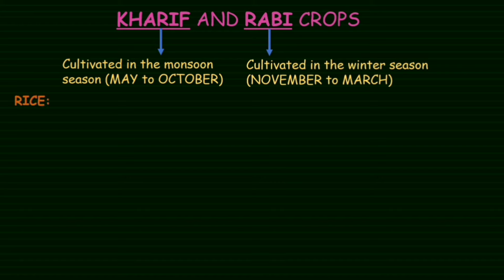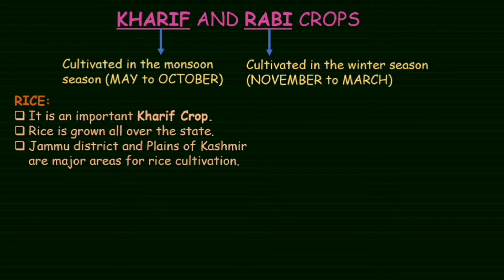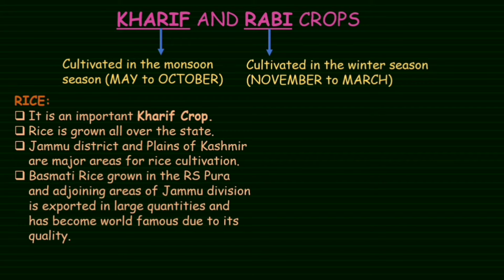Now, rice. Rice is an important food crop grown all over the state. Jammu District and the Plains of Kashmir are major areas for rice cultivation. Basmati rice grown in RS Pura and adjoining areas of Jammu Division is exported in large quantities and has become world famous due to its quality.